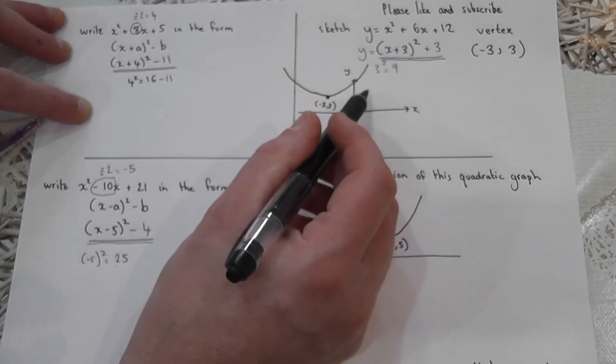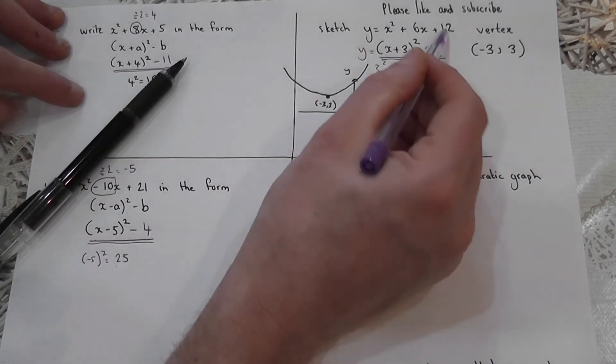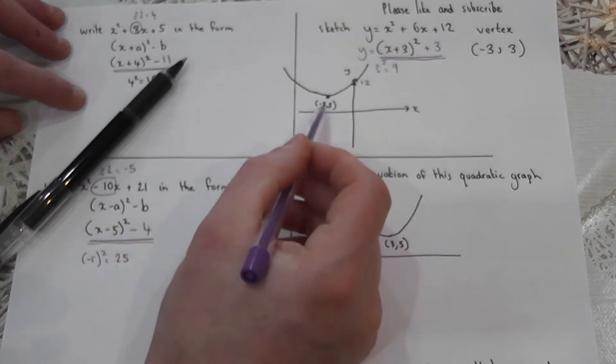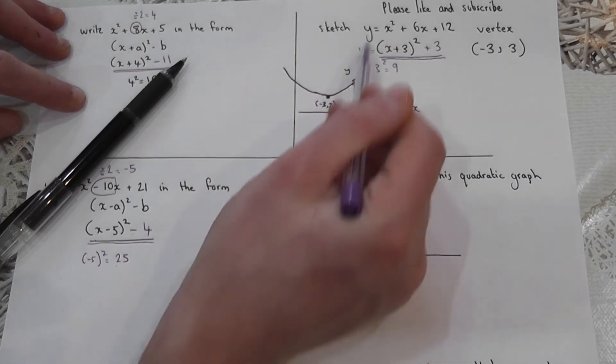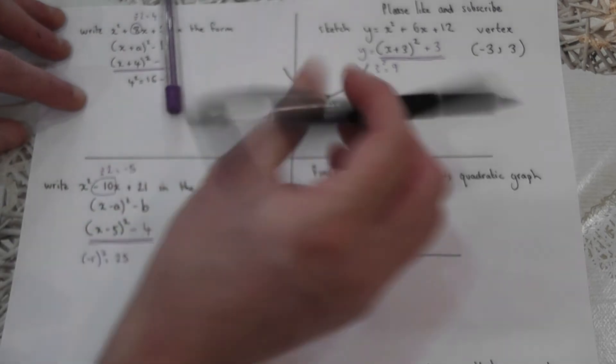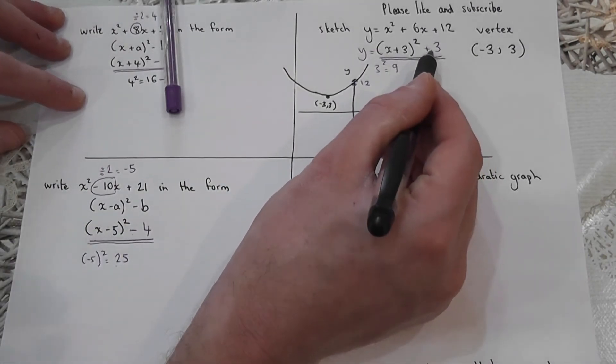And as one extra point, that plus number in the equation is always the y-intercept. So I can therefore write a 12 here as well. So there's the vertex, there's the y-intercept. An x squared graph is always this sort of smiley face U-shape or parabola. And that golden rule always works. Change the first sign in the bracket and keep the second sign.